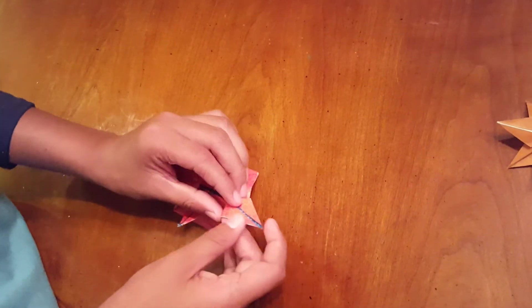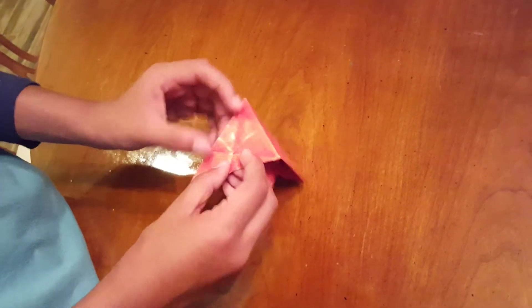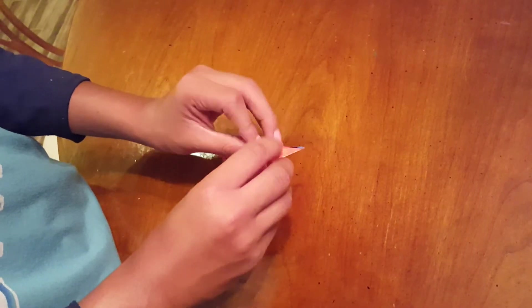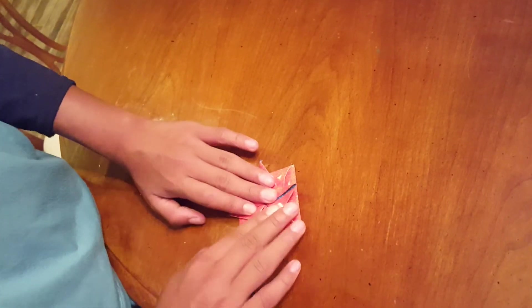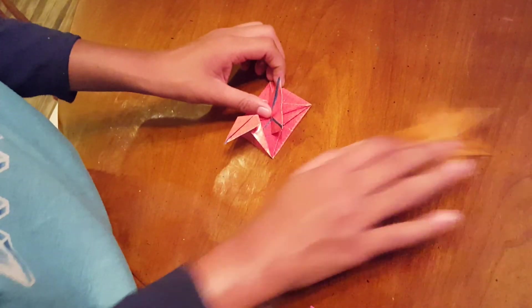Change these valleys to mountains and change these mountains to valleys. Now these are four of the points of the ninja star, but as you saw on here there were...